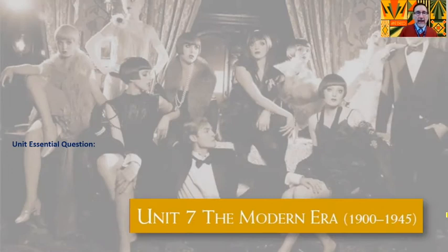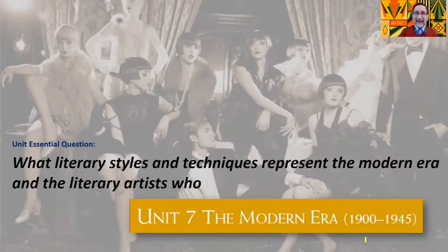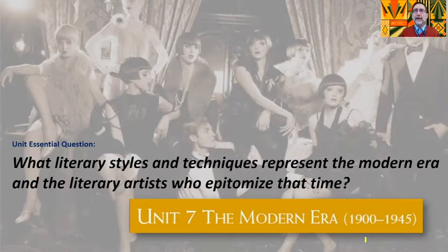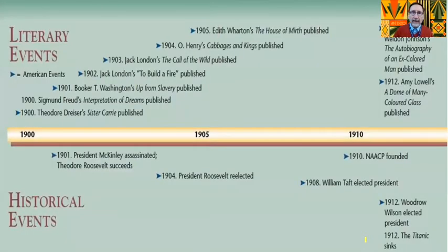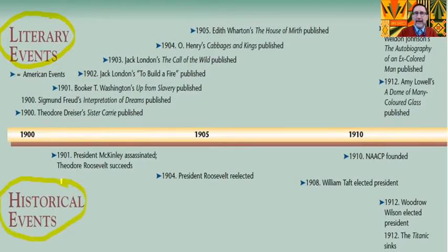Let's get started. This is unit seven in the textbook, unit six for us, and it's going to be the last one, running from 1900 to 1945. Our unit essential question is: what literary styles and techniques represent the modern era, and who are the literary artists who best exemplify that time period? We're going to look at the history of this time period, what was going on in American history, and what the writers were saying. Above the timeline, it's always literary events — things printed and published at that time. Below, things going on in the United States and sometimes the world.